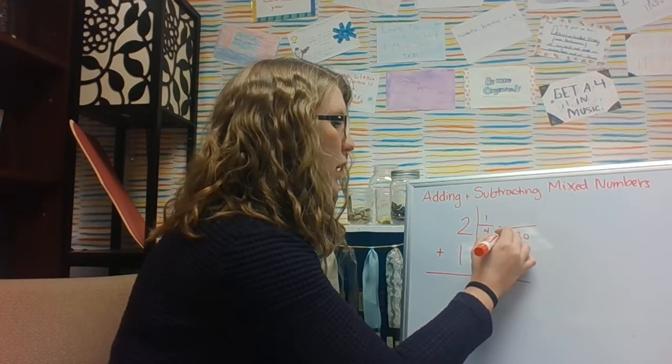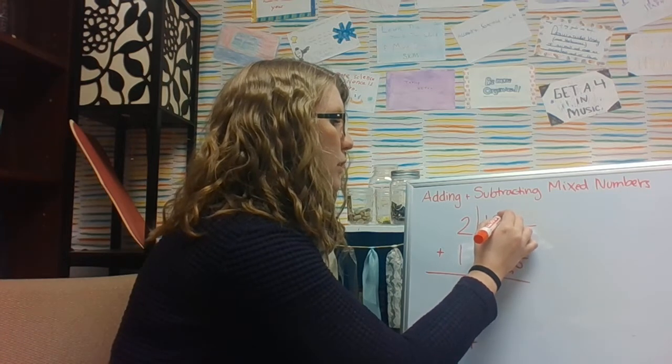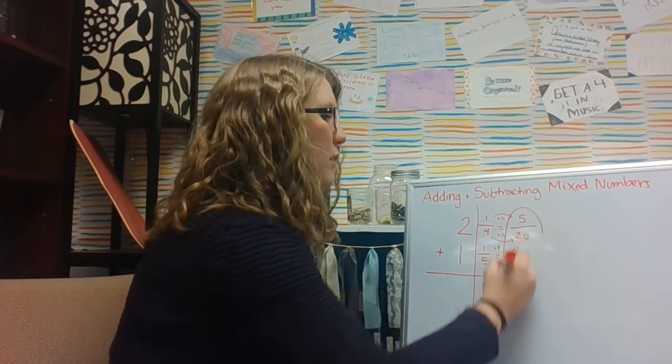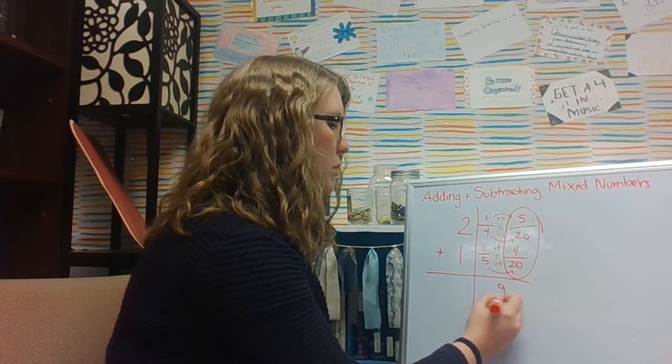To get from 4 to 20, I multiply by 5. If I do something to my denominator, I need to do it to my numerator. 1 times 5 equals 5. I now have 5/20 plus 4/20, which equals 9/20.